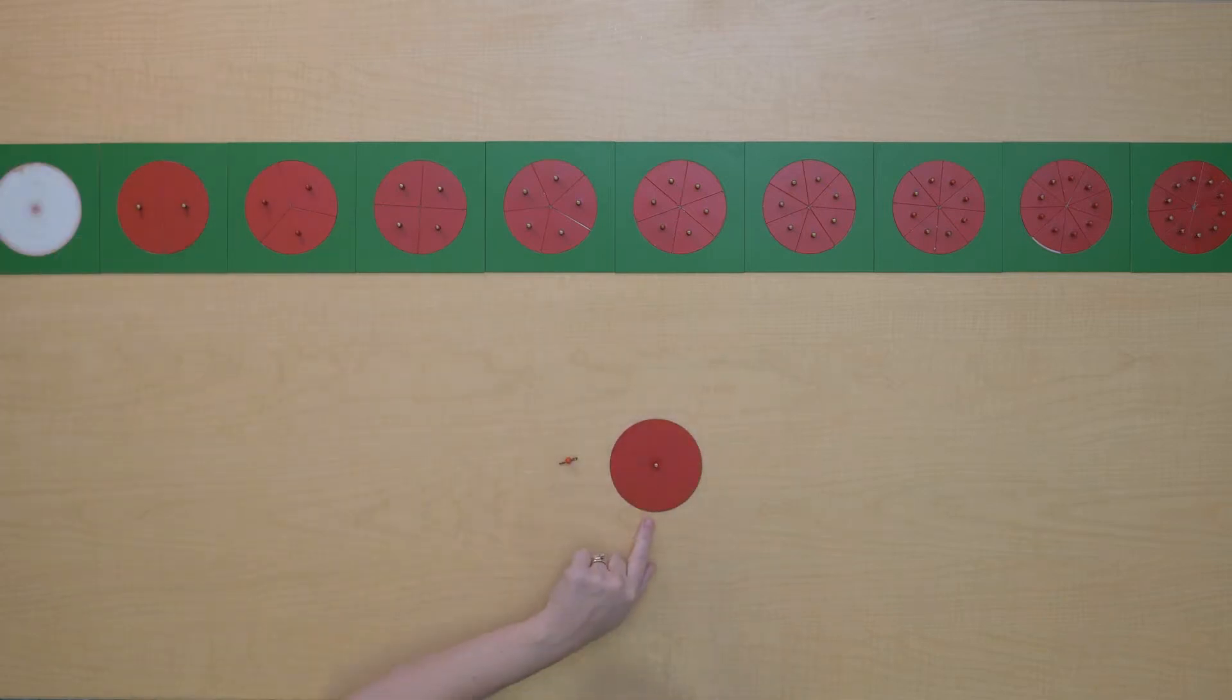This circle is also a unit. It's almost as if I've squished this one flat to create a unit. So this is one unit.